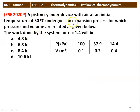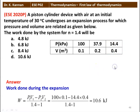Next question: a piston-cylinder device with air at initial temperature 30°C undergoes an expansion process with PVⁿ = constant for N = 1.4. Given: pressure values 100, 37.9, 14.4 kPa and volume values 0.1, 0.2, 0.4 m³. Initial: P1 = 100 kPa, V1 = 0.1 m³; final: P2 = 14.4 kPa, V2 = 0.4 m³. Work = (P1V1 − P2V2)/(1.4 − 1) = (100 × 0.1 − 14.4 × 0.4)/0.4 = 10.6 kilojoules.